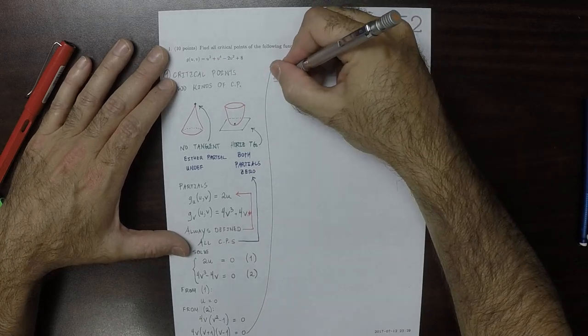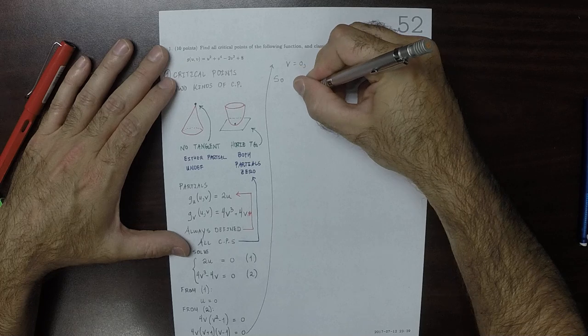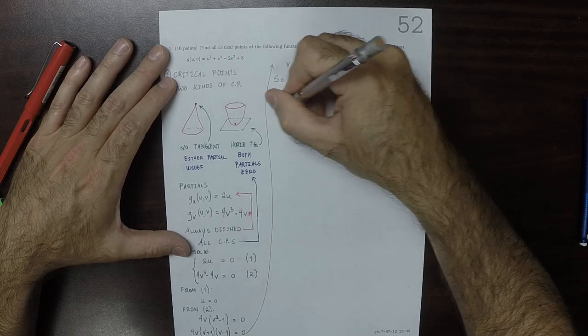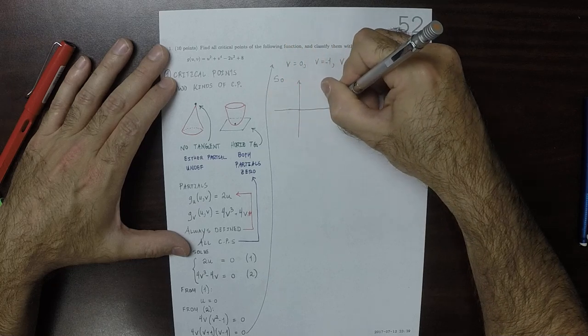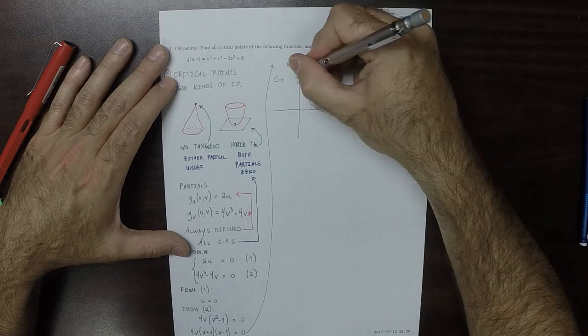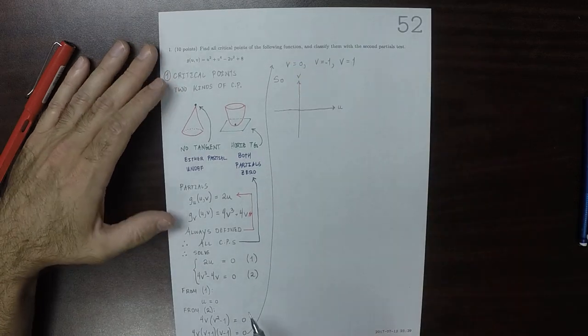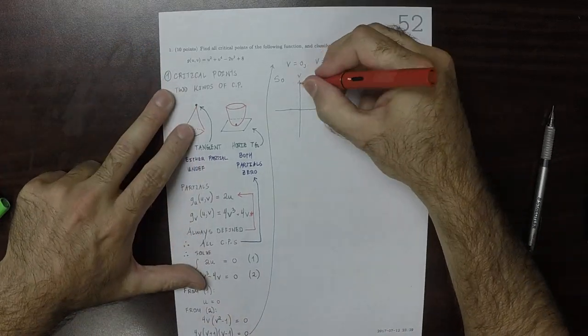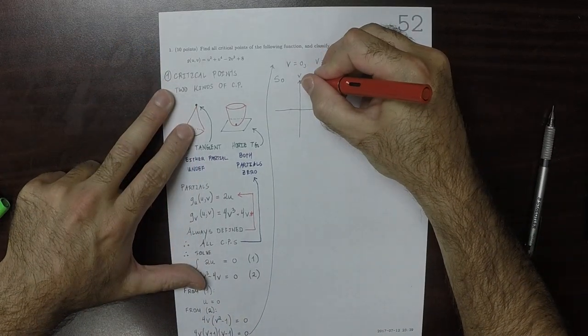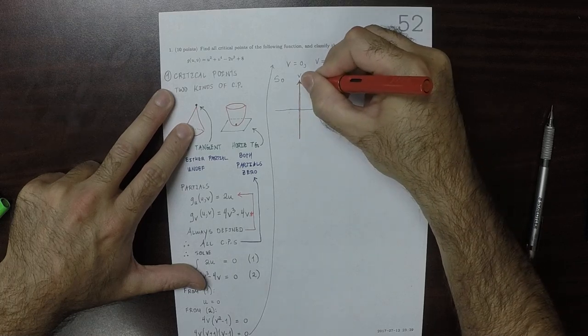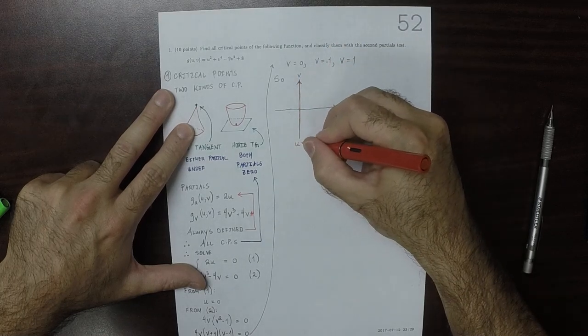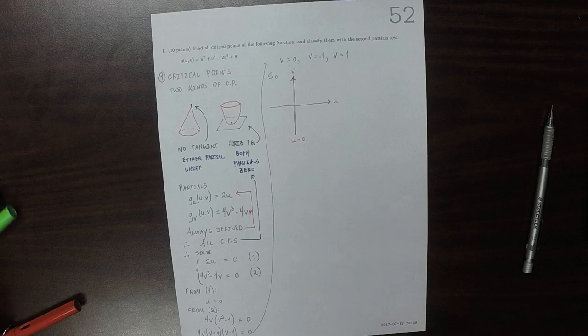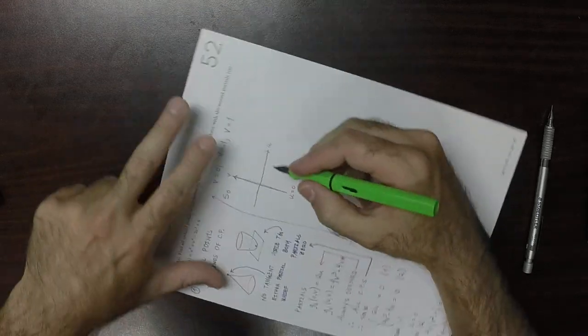So that means that the critical points on the U, V plane. So U and V, we know that U has to be zero. So this is, this red is the equation for U is zero. And then V is zero looks like this.